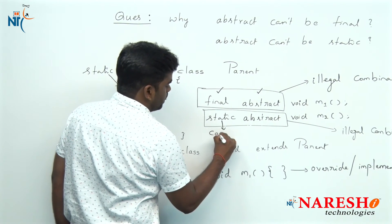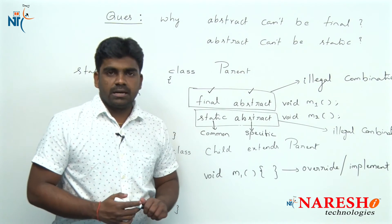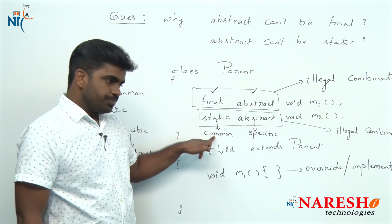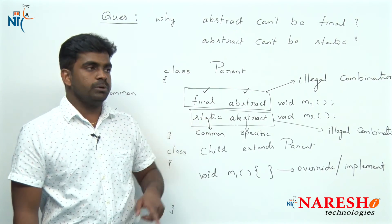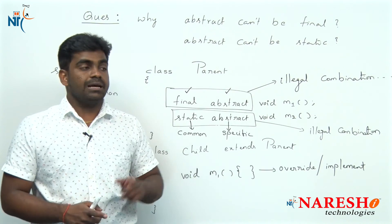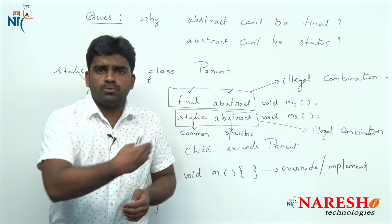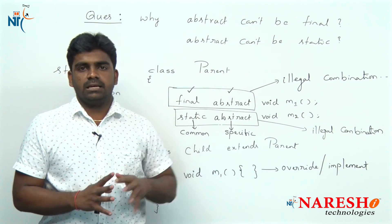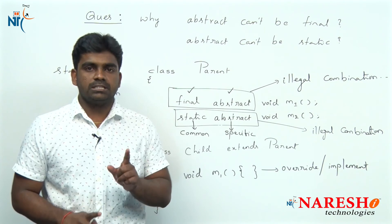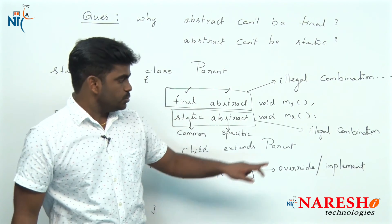One is common and one is specific — you cannot say both at once. For example, consider the reception area at Naresh IT. If your first statement is 'reception is a common area' — meaning it is a static area, anyone can go and access — that is fine. But then if your next statement is 'reception is a non-static area, please take permissions to access it,' how will people allow that? Two contradictory statements one after another. You just said it is a static area and then you say it is non-static — they will definitely reject it. That is why common and specific cannot be combined, meaning static and abstract cannot be combined — it is an illegal combination.